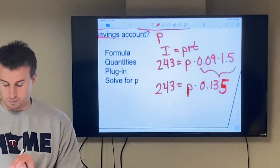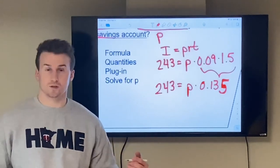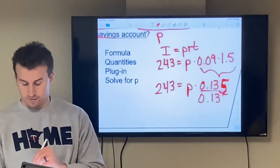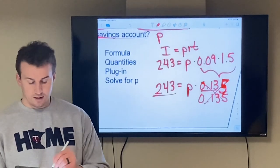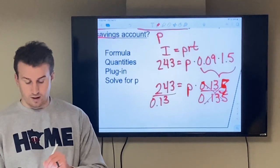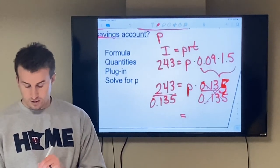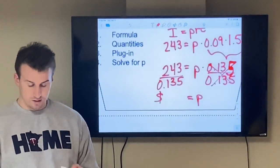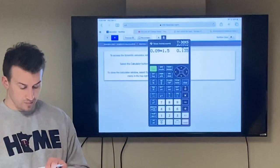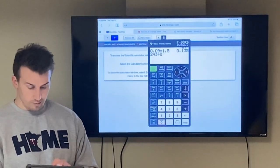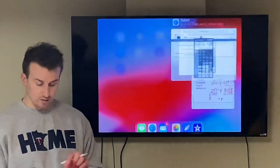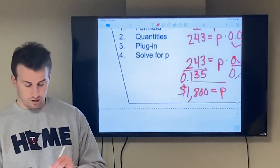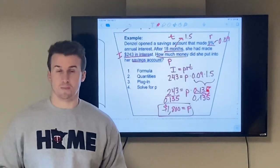So now I can't multiply the principal by that decimal amount because I don't know what it is. So like we talked about before, the percent equation, I'm going to divide 0.135, which will cancel out on that side. So then I'm going to divide $243 by 0.135. And that will tell me the principal amount that was put into the savings account. So I'm going to go back to my calculator, type in $243 divided by 0.135, giving me $1,800. So there was $1,800 put into the savings account.